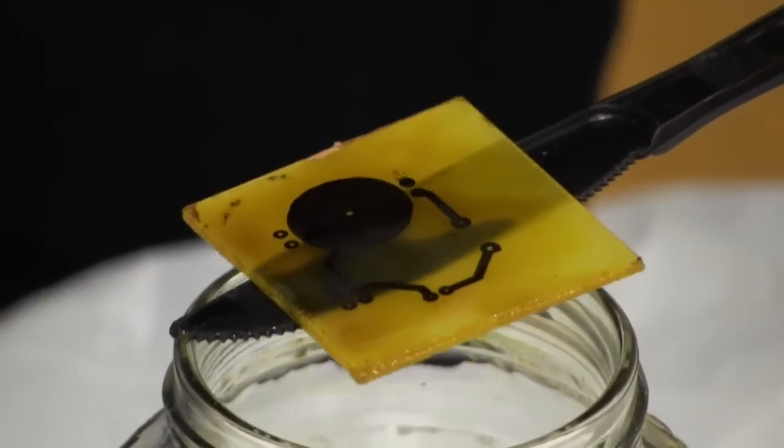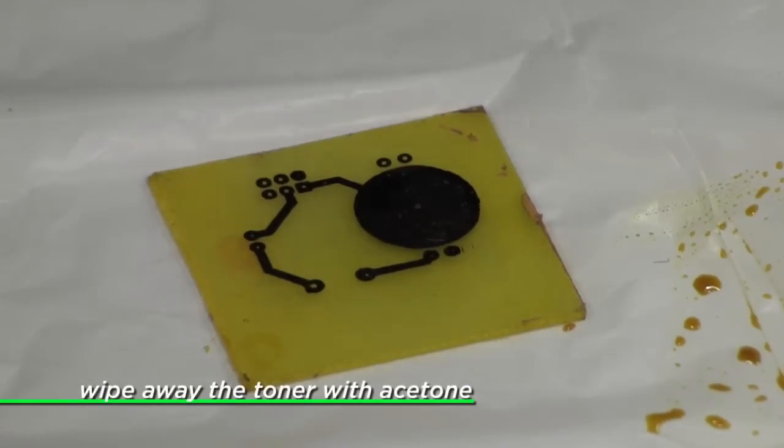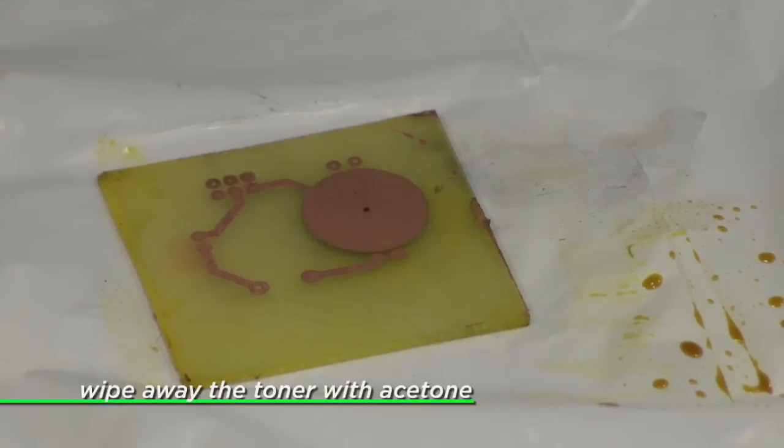Now that we've gotten rid of the extra copper, we can get rid of this toner. We wipe it away with some more acetone, and now we can see the shiny copper circuit that matches our original paper circuit.